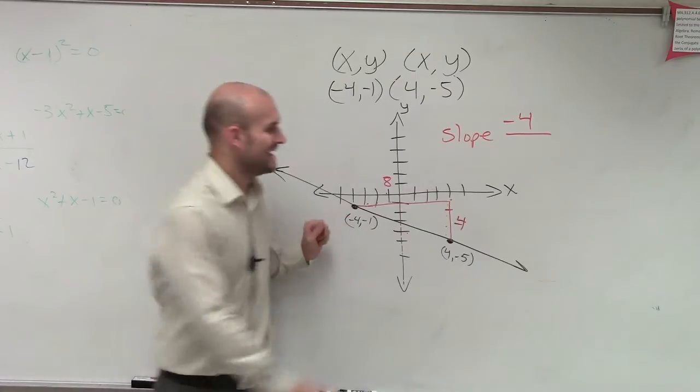Now remember, slope. What is slope? Slope is your change in your y value. So how far did I change vertically in between my y values? Negative four. Make sure you include the direction. How far did I change horizontally? Eight.